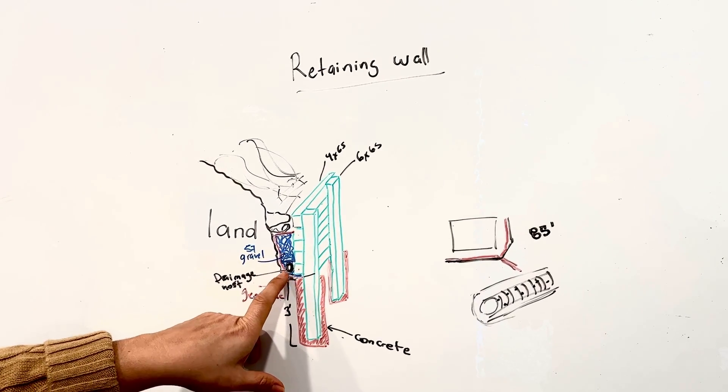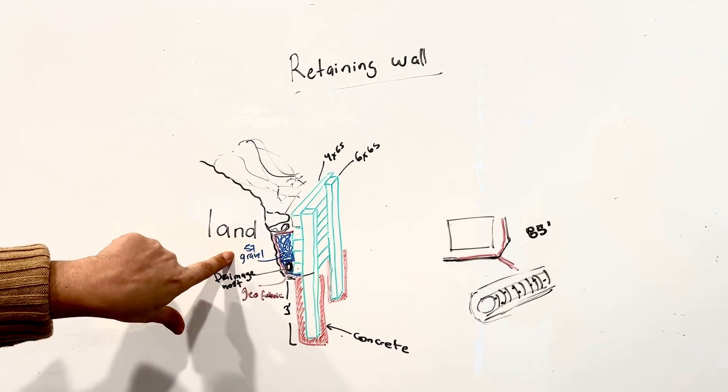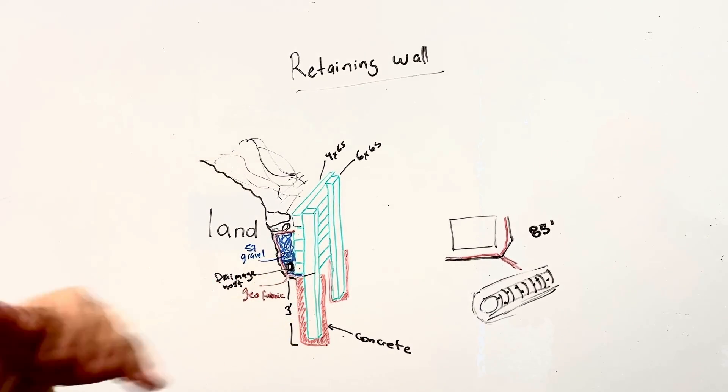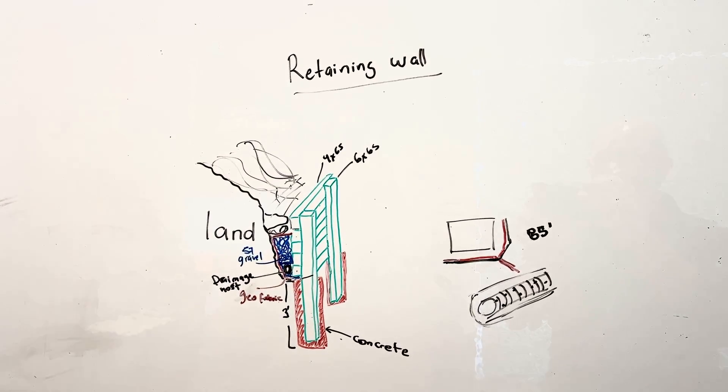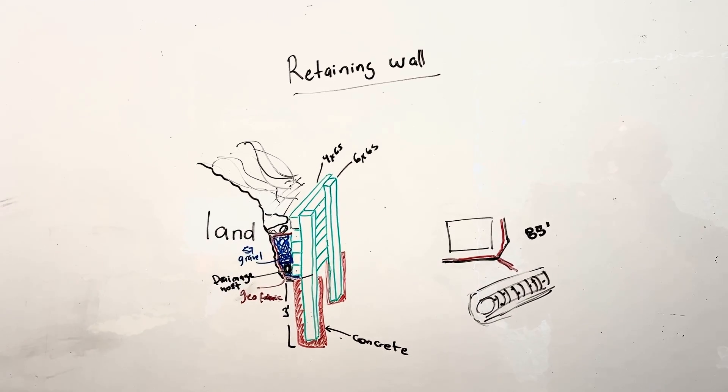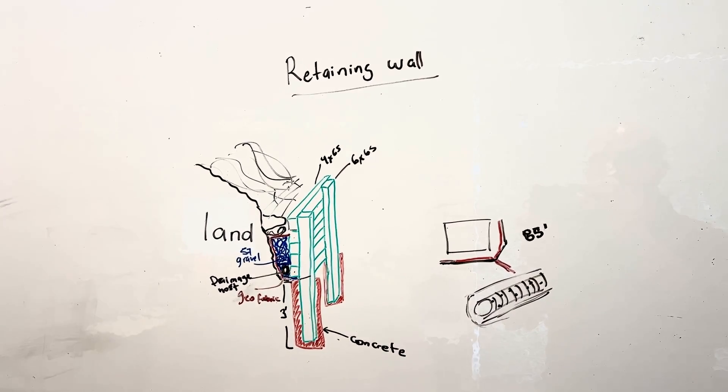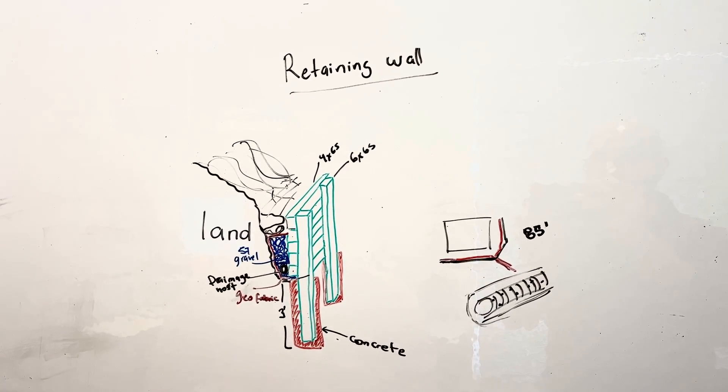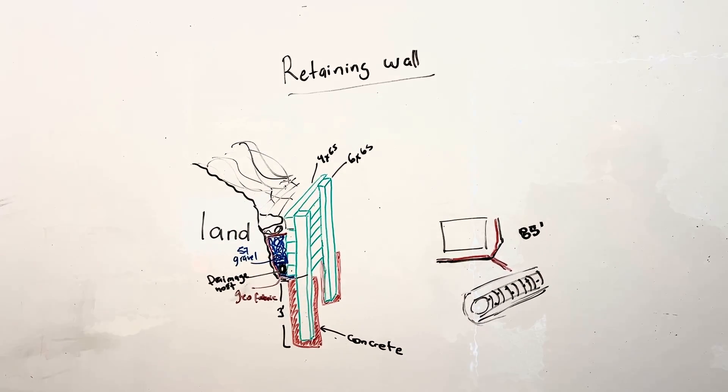What you're seeing there in blue is the 57 gravel. We're going to do a little bit of a bedding before the first four by six. Again, the idea is to help with water flow and avoid direct contact. Clearly it's a retaining wall, there will be certain direct contact, but you just want to avoid as much as possible.